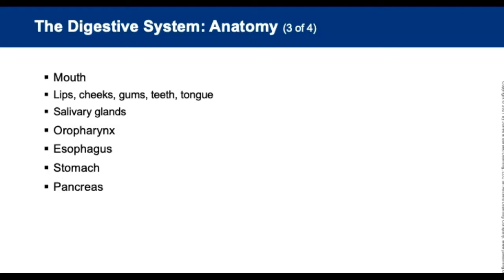The digestive system begins at the mouth, which consists of cheeks, lips, gums, teeth, tongue, hard and soft palate, and salivary glands. From the mouth, food moves into the oral pharynx — a tube extending to the esophagus and trachea. The esophagus is about 10 inches long, extending from the pharynx to the stomach, with muscles propelling food downward. The stomach is a hollow organ in the left upper quadrant that receives, stores, and moves food into the bowel.